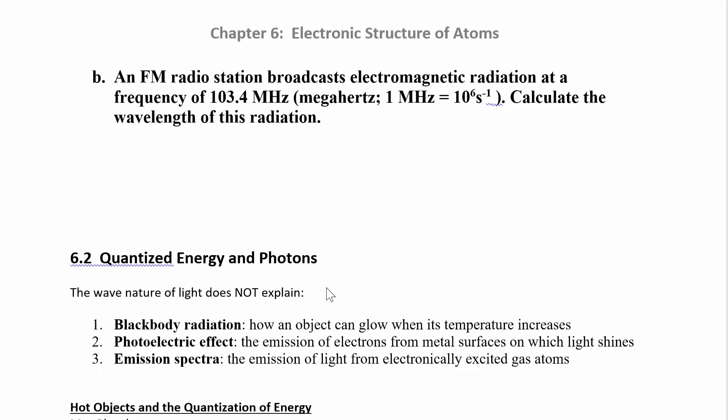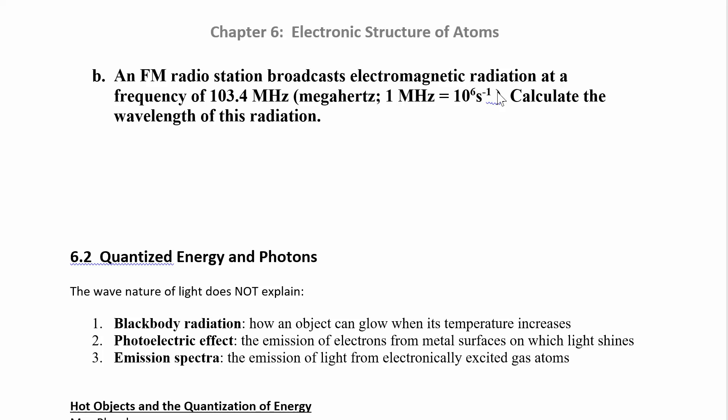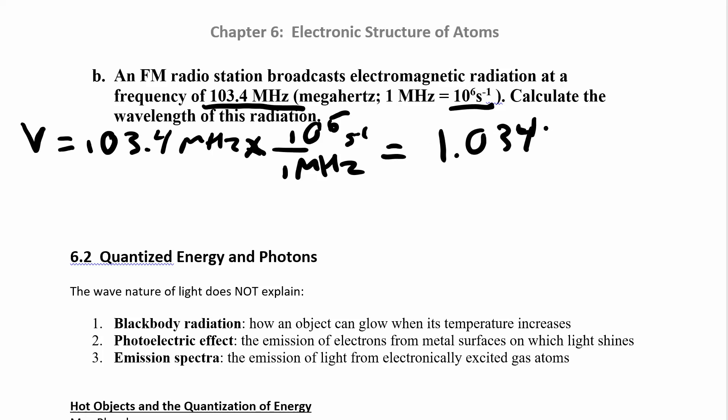So let's try another one. You have an FM radio station broadcasting electromagnetic radiation at a frequency of 103.4 megahertz. And they give you the conversion for megahertz because that's not one that I asked you to memorize. But 1 megahertz is 10 to the 6. Calculate the wavelength. So this time they're giving you frequency. So the frequency is 103.4 megahertz. Let's go ahead and convert that just to hertz so our units will be fine when we bring the speed of light in here. So we have 1 megahertz is 10 to the 6 seconds to the negative 1. So you end up with 1.034 times 10 to the 8 seconds to the negative 1. That's your frequency.